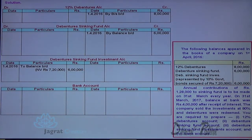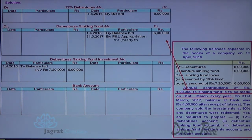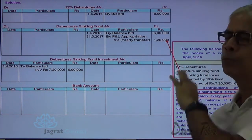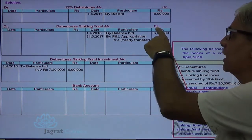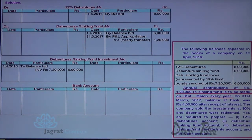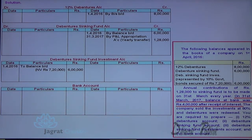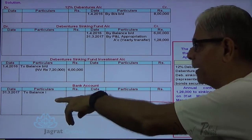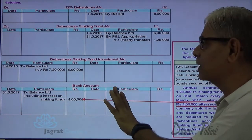Over and above, the next transaction: annual contribution is 1,28,000 to sinking fund. The journal entry for that is profit and loss appropriation account debit, to sinking fund account credit. This is the yearly transfer to sinking fund. So, 6 lakhs were there and 1,28,000 is transferred. On 31st of March, the balance in bank account is 4 lakhs after receipt of interest. So, opening bank balance given to you is 4 lakhs after receipt of interest.